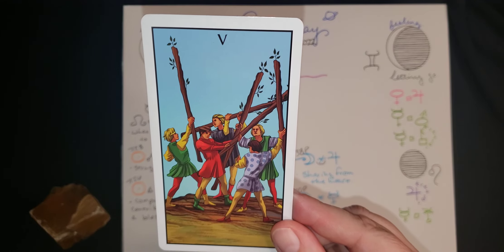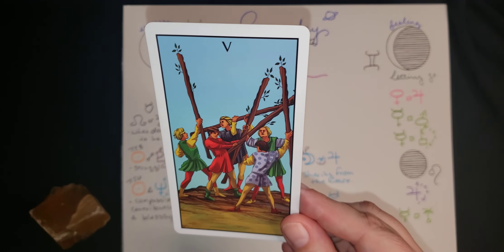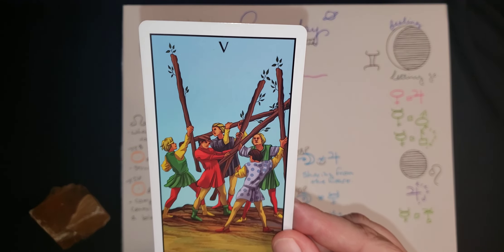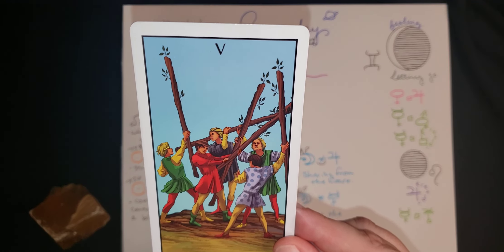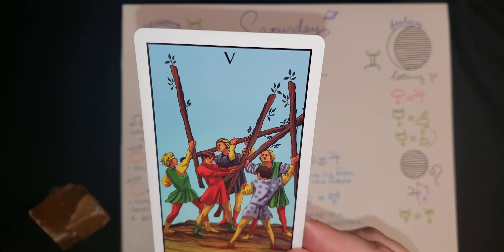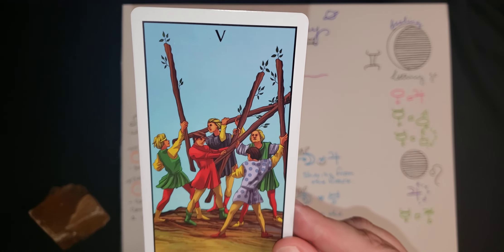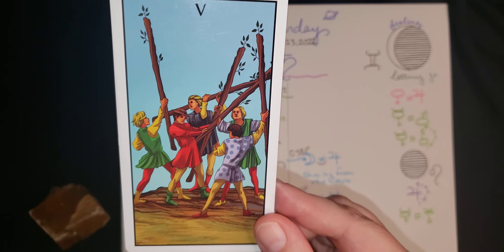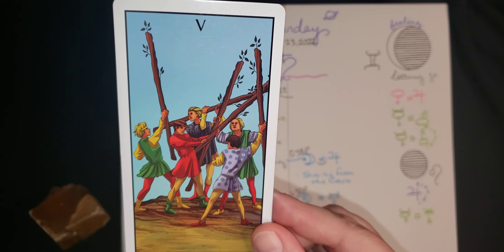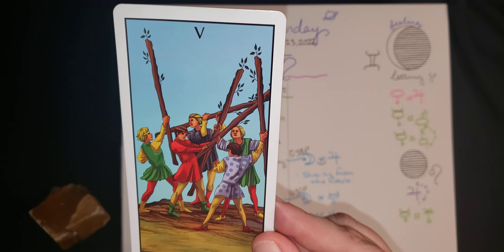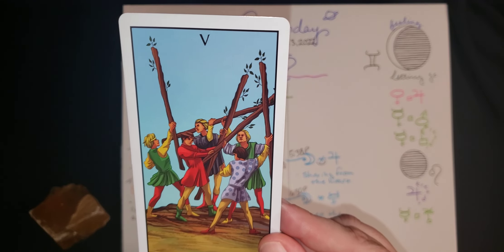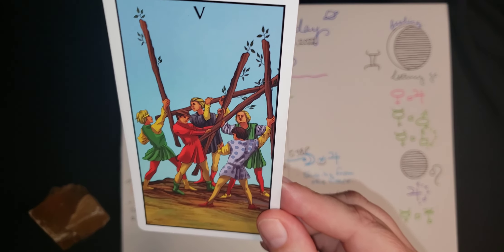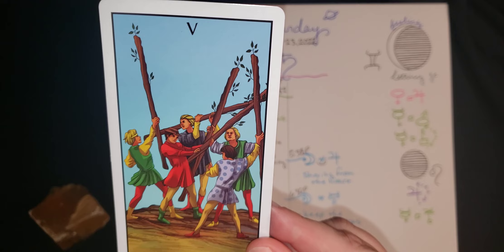Here we have the Five of Wands, and we can see that we have five people, each with a wand of their own, and they seem to be in sort of a struggle with one another. It's a very confusing situation. It's hard to see who's really struggling with whom. But what we can see is that nobody's really getting hurt in this fight. This is all above the belt. Nobody seems to be swinging sticks directly at anybody's head or body. It's really just sort of a competition of wills.